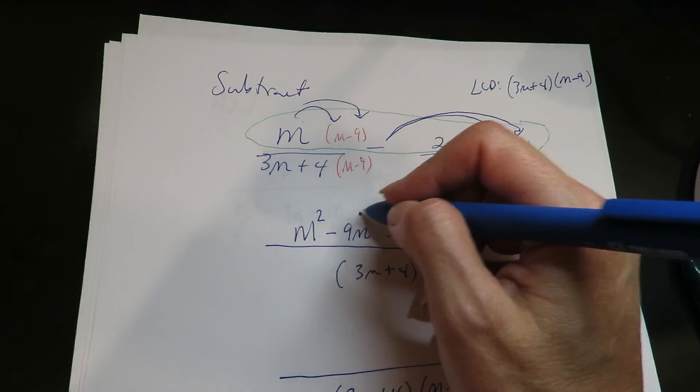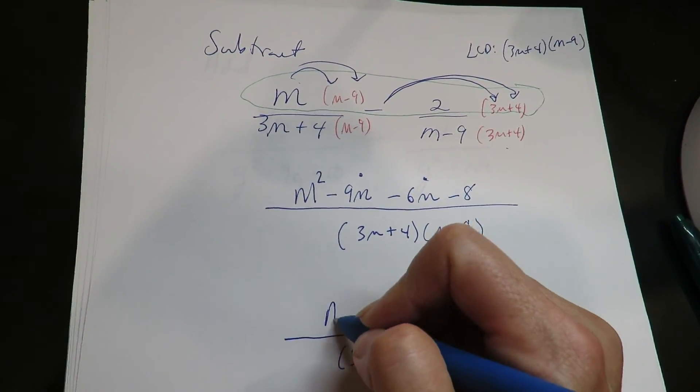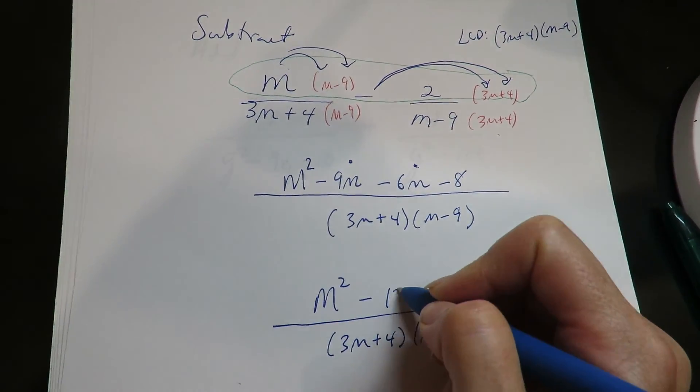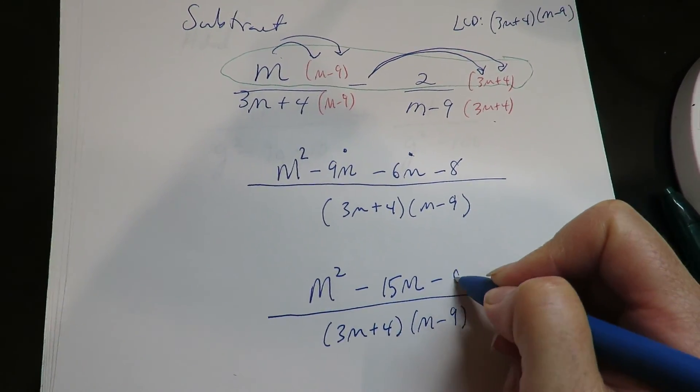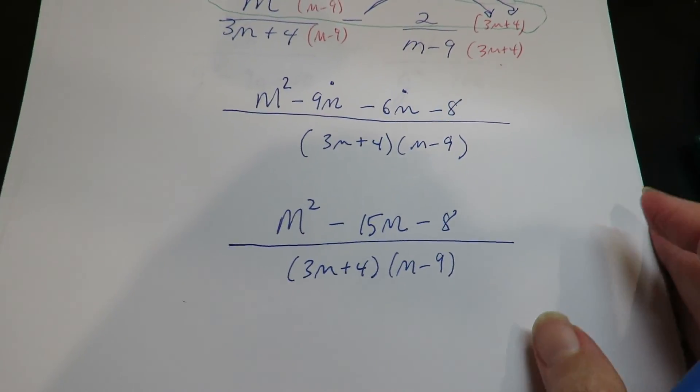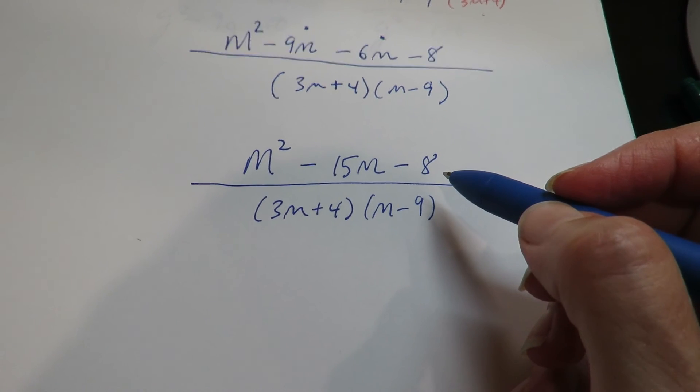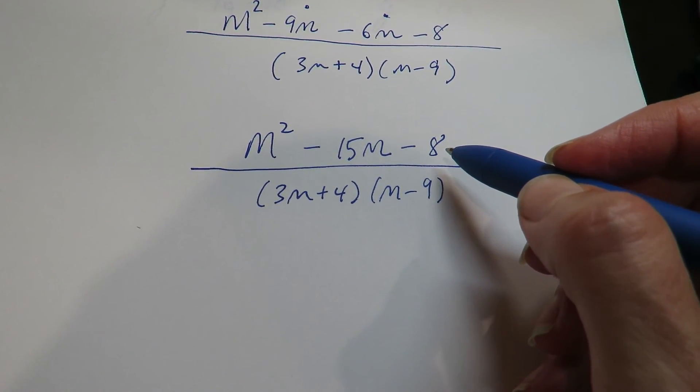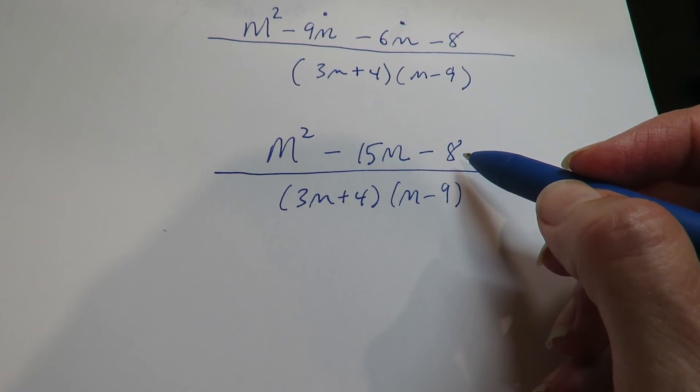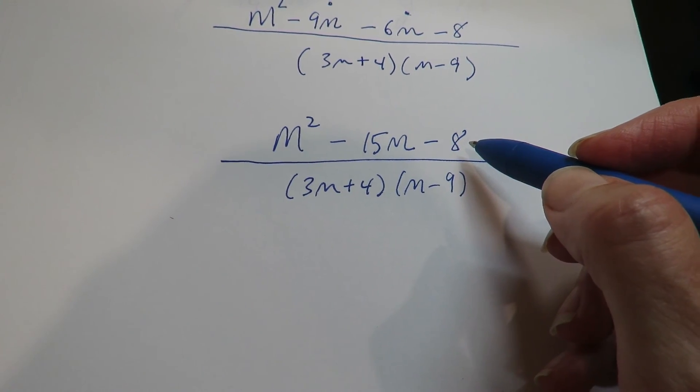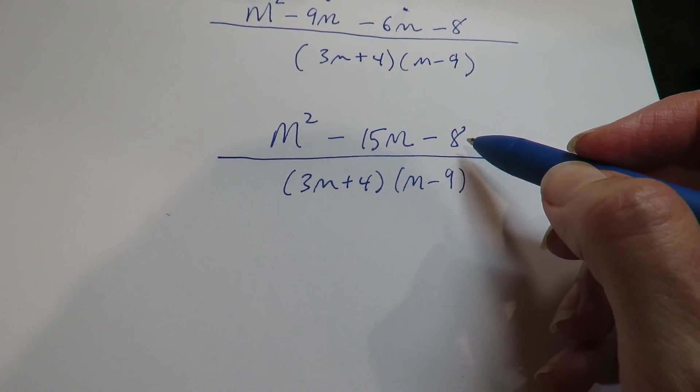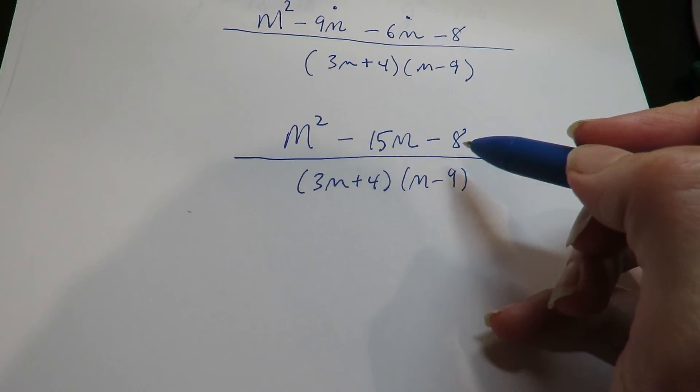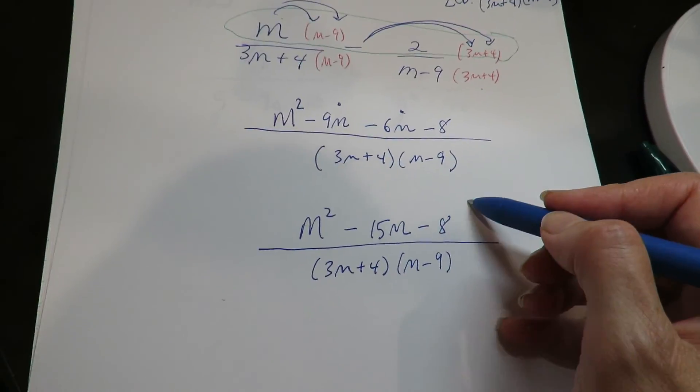All right, now you're going to combine like terms. And at the very end, and I said this in the previous problem, you always want to check to see if the numerator factors. And in this case it does not. There's not any number that multiplies to negative 8 and adds to negative 15. So this is done.